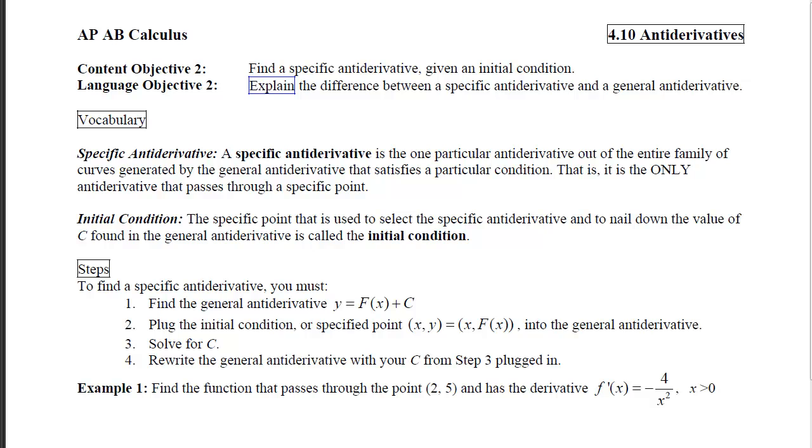First, we have some vocabulary. We have something called a specific antiderivative, and it is the one particular antiderivative out of an entire family of curves generated by the general antiderivative that satisfies a particular condition. That is, it is the only antiderivative that passes through a specific point.